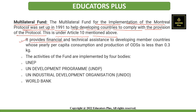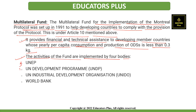The fund provides financial and technical assistance to developing member countries whose yearly per-capita consumption and production of ozone depleting substances is less than 0.3 kg. The activities of the fund are implemented by four bodies: UNEP (United Nations Environment Programme), United Nations Development Programme, United Nations Industrial Development Organisation (UNIDO), and the World Bank.